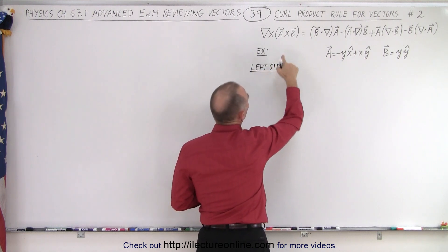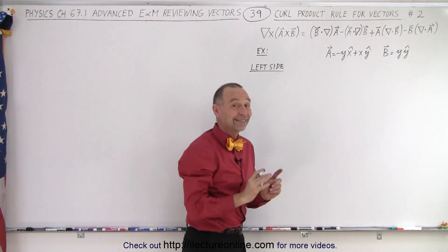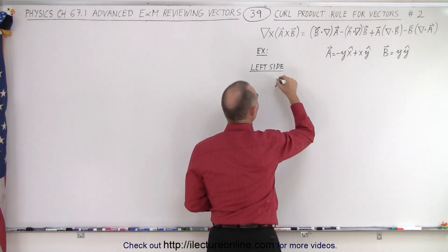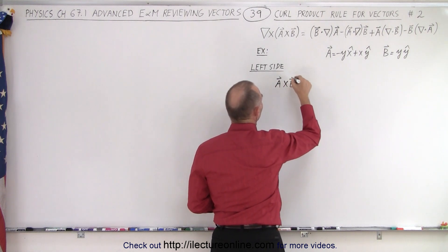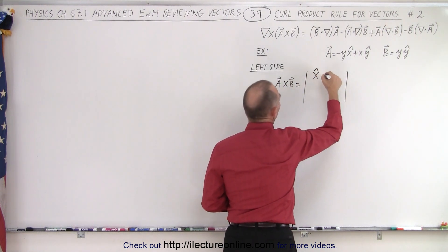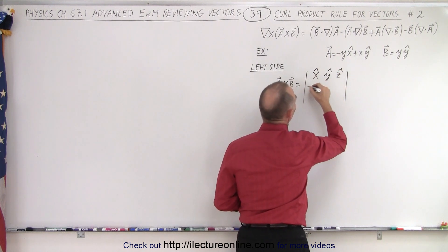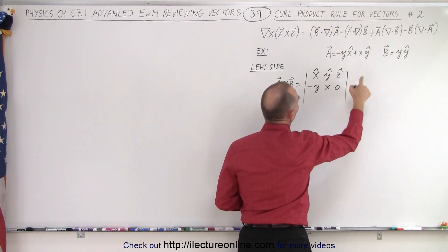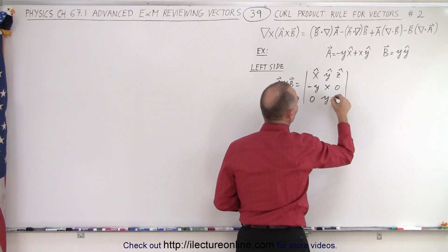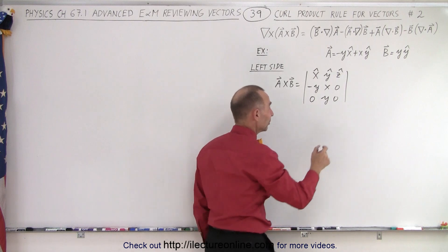First, what we need to do is take the cross product of a and b, and luckily we chose simple vectors — that makes it a little bit easier. So a cross b is equal to the determinant with x, y, and z unit vectors; the components of a, which is minus y, x, and 0; and the components of b, which is 0, y, and 0.